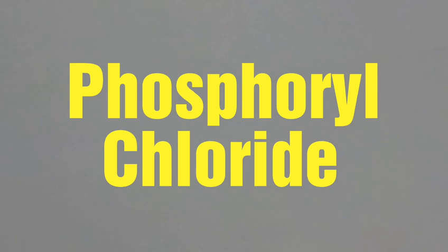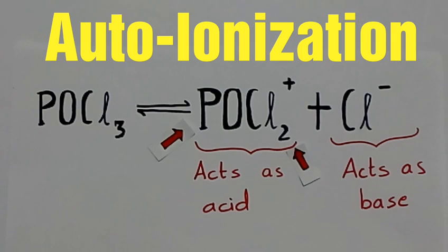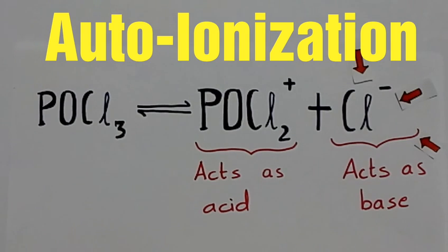Let us study about phosphoryl chloride. The auto ionization of phosphoryl chloride can be written as follows. Any species increasing the concentration of POCl2+ acts as an acid. Any species increasing the concentration of chloride ion acts as a base.